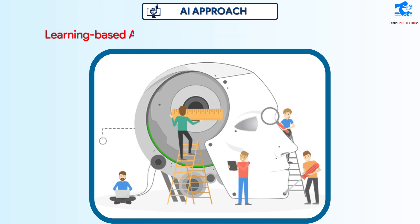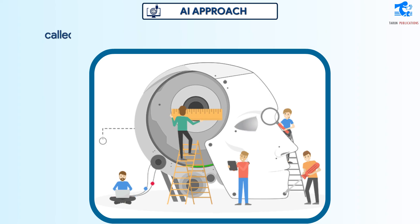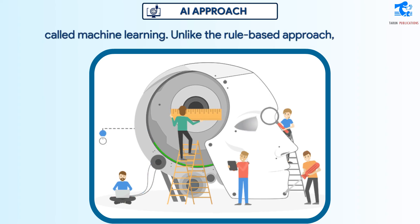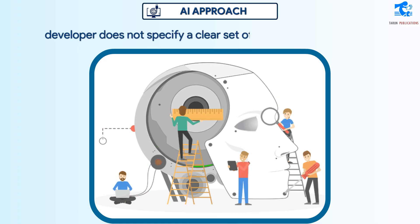In the Learning-Based Approach, AI is achieved through a technique called machine learning. Unlike the rule-based approach, the developer does not specify a clear set of rules for everything. The machine learns by itself and takes decisions on its own.